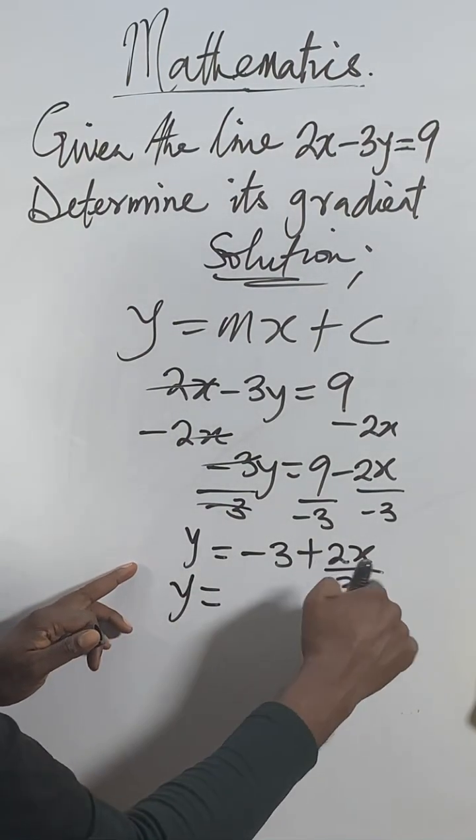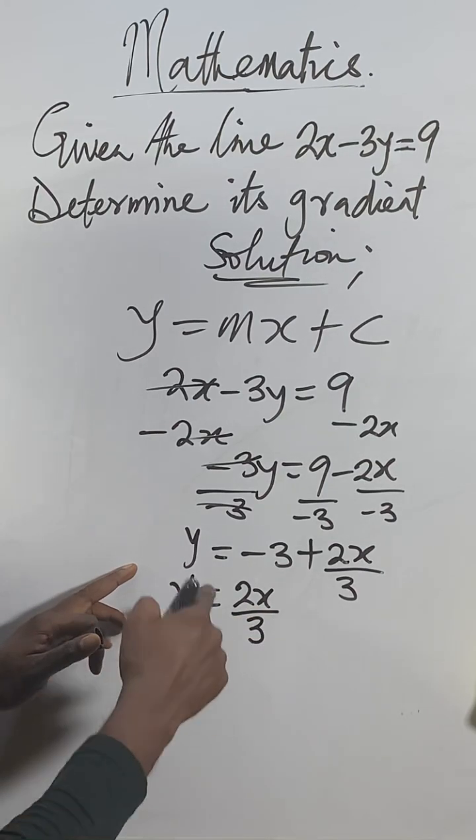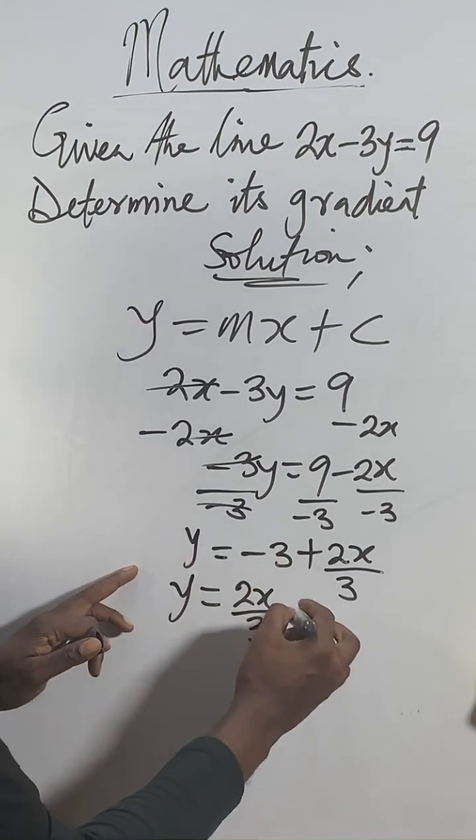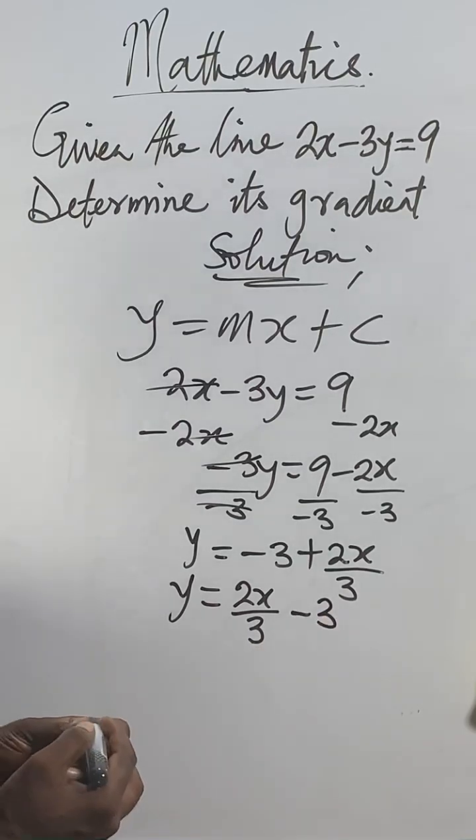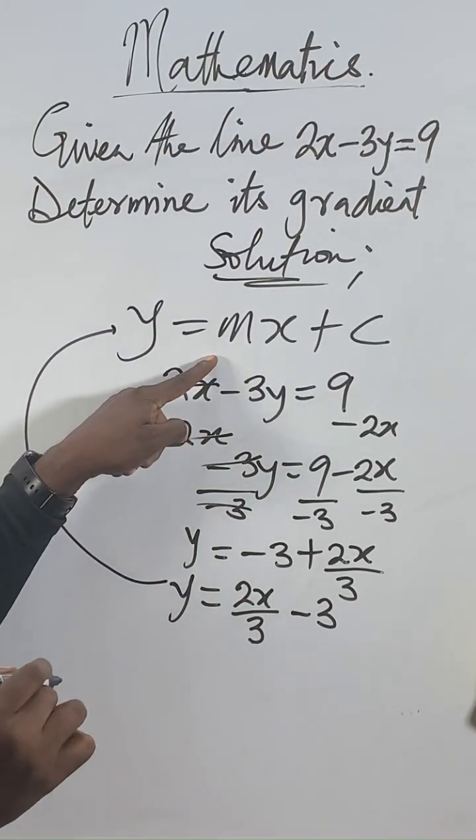So y now equals 2x over 3 - 3. Now compare this one to this equation. The slope, let's make it fine.